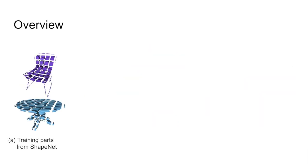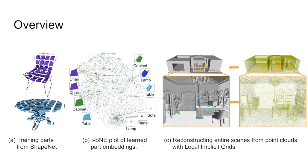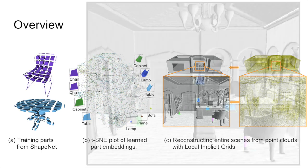We learn an embedding of parts from objects in ShapeNet which originate from different object categories. Training enforces that parts with similar geometry are close by in the latent space. These learned embeddings are then used to obtain high-fidelity reconstructions of large 3D environments.